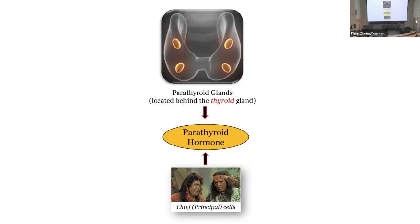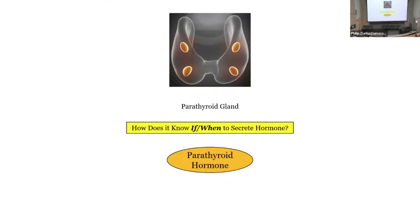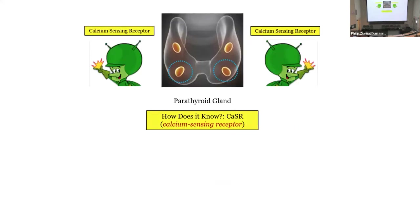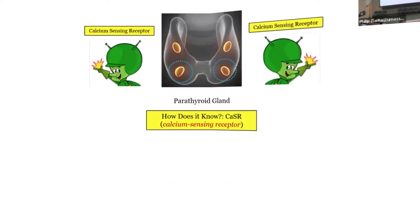The parathyroid glands are located behind the thyroid — parathyroid, not headline news to anybody, but we'll show you how they use that in a little while. What are the cells in the parathyroid that elaborate parathyroid hormone? The chief or principal cells. So how does the parathyroid gland know when to secrete hormone to regulate calcium? It has calcium-sensing receptors.